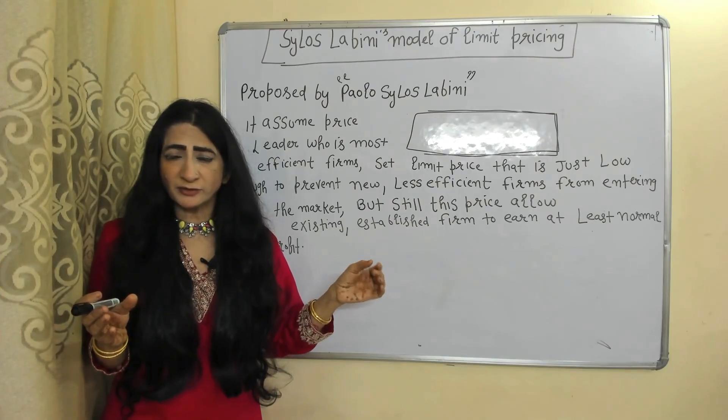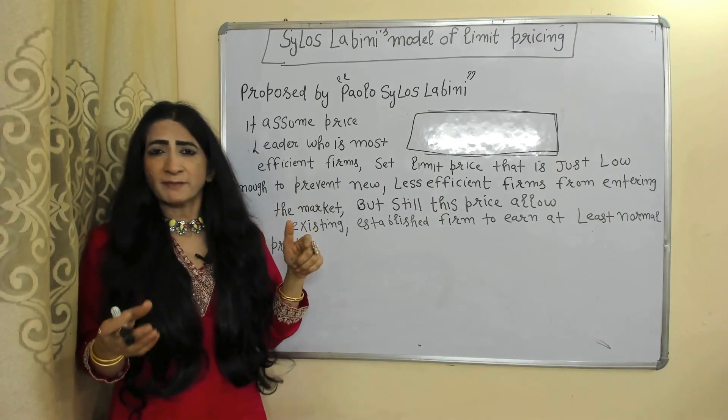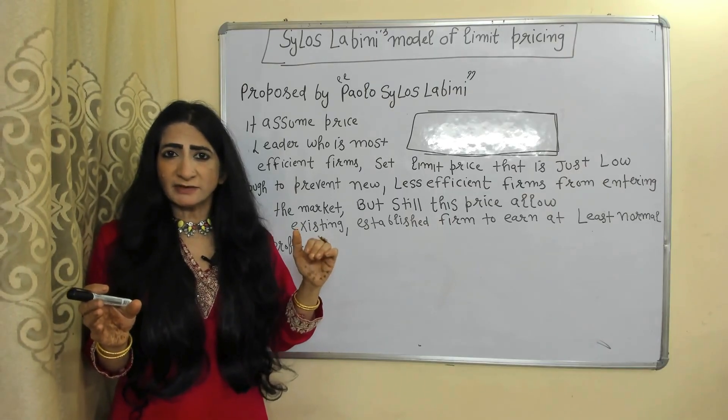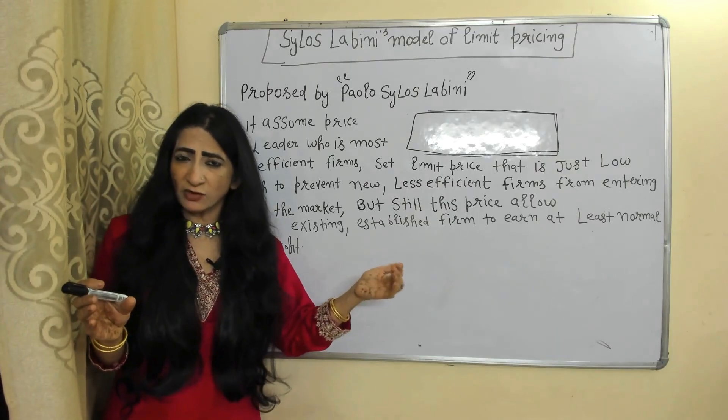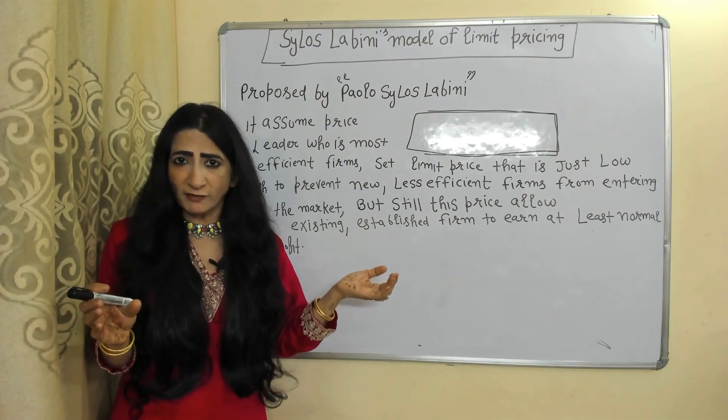But still this price allows existing and established firms to earn at least normal profit. In short, according to this model, the price leader firm will set a limit price that prevents entry of new firms but still allows existing firms to earn at least normal profit.